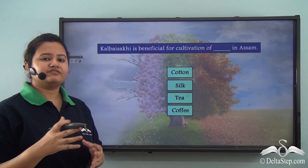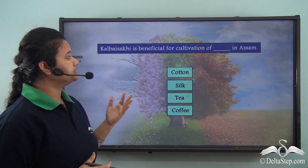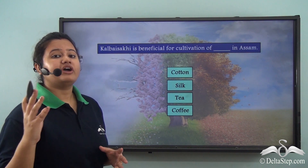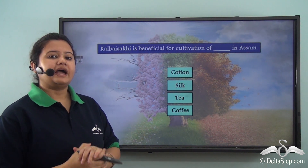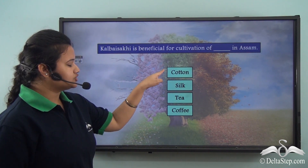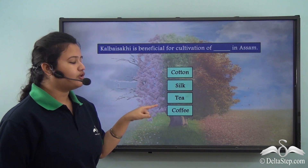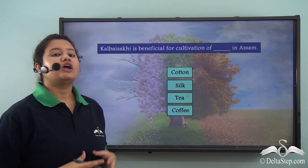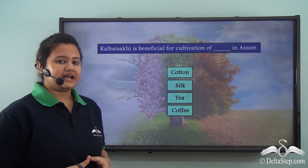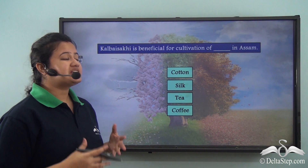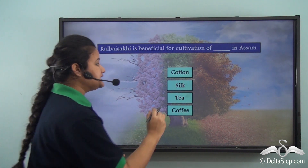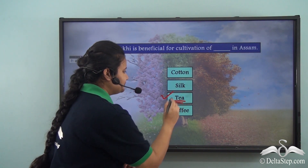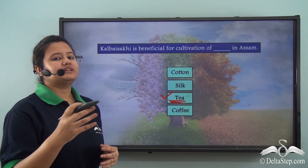Let us try to answer this question: Kalbaishakhi is beneficial for cultivation of which crop in Assam? The options given are cotton, silk, tea, or coffee. We just read that Kalbaishakhi favours cultivation of tea crops in the state of Assam, so the correct option is tea. Now let us proceed with our lesson.